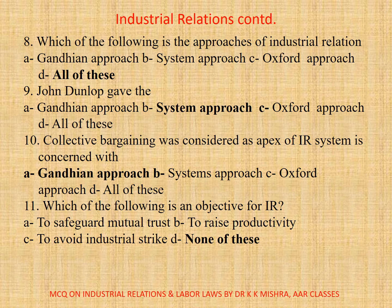Question 10: Collective bargaining was considered as the apex of the IR system, concerned with A. Gandhian approach. B. Systems approach. C. Oxford approach. D. All. Correct option is A. Gandhian approach. Question 11: Which of the following is an objective of IR? Correct option is D, as none are the objective of IR.